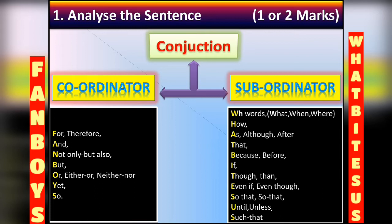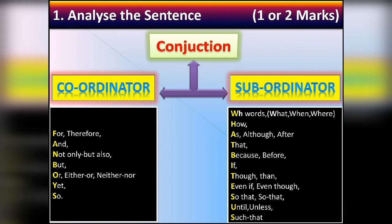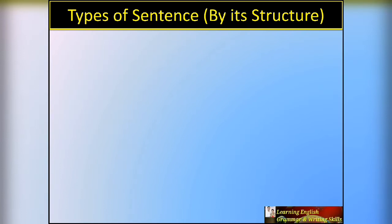Subordinators include: when, as, how, although, after, because, before, if, though, then, even if, even though, so that, until, unless, such that. If you remember FANBOYS you remember coordinators, and if you remember 'what bites us' you remember subordinators. A conjunction is used as a connecting word between two sentences.